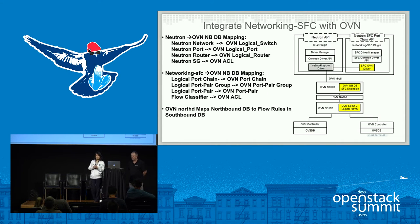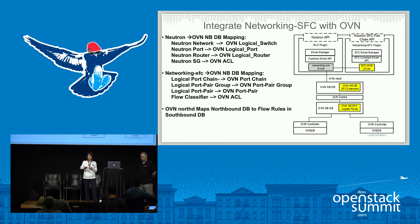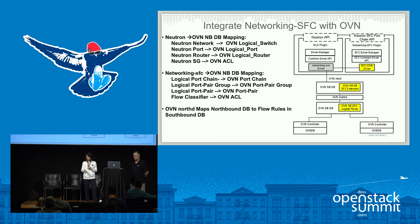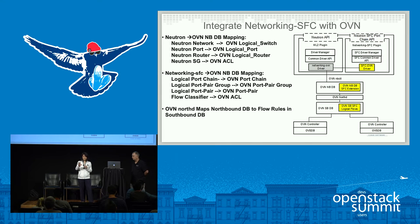This slide shows at a high level how to integrate networking SFC with OVN. On the right side is the architecture diagram showing the Neutron API, through the ML2 plug-in, mapping to the networking OVN driver, then mapping API data structures to OVN's northbound DB, and creating flows in the OVN southbound DB. Similarly for service function chain, the SFC OVN driver maps the API constructs to the OVN northbound DB service function chain constructs, then programs logical flows into the southbound OVN DB.